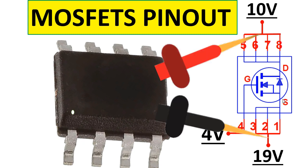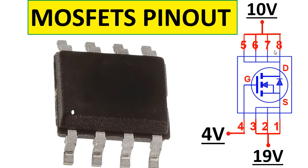When you reverse the probes you will not get any reading — this means the MOSFET is good. But if you test the MOSFET with the multimeter and you hear a buzzer or continuity between the drain and source in both directions, the MOSFET is bad.